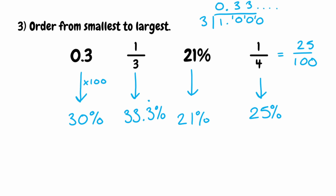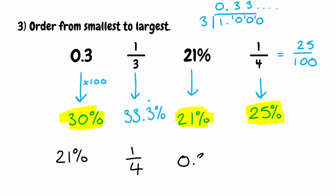Now ordering these from smallest to largest: our smallest percentage is 21%, so the original value is 21%. The next smallest is 25%, so our original value is a quarter. Then our next smallest is 30%, so we use our original decimal of 0.3. And finally, the biggest is 33.3 recurring percent, and our original value was one third. So in order from smallest to largest: 21%, one quarter, 0.3, and one third.